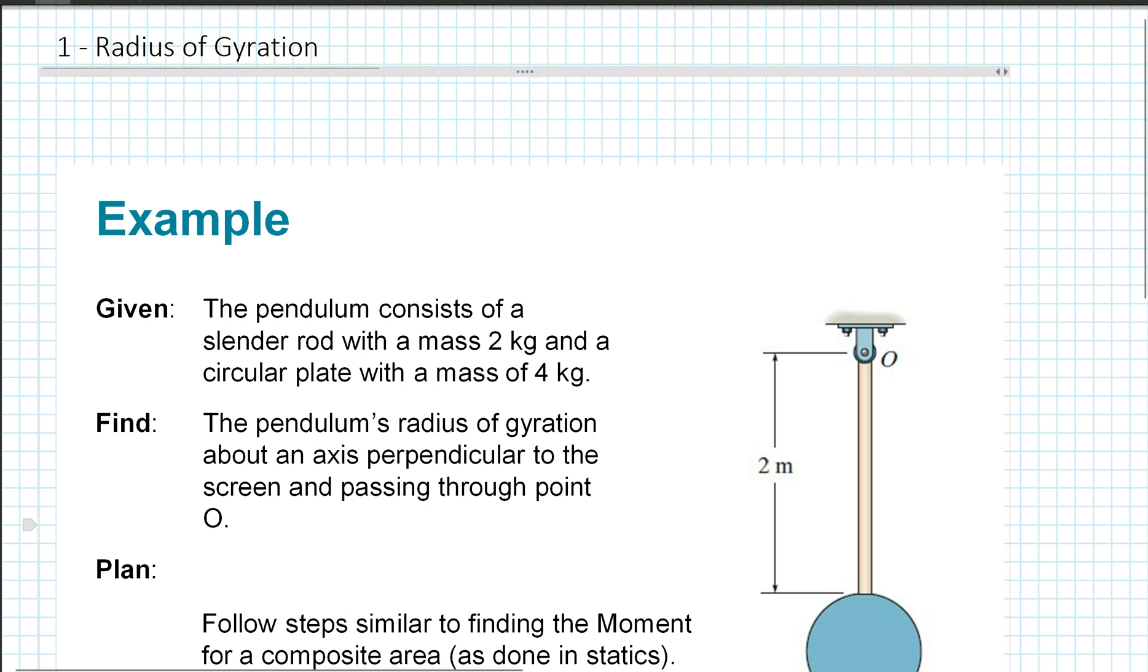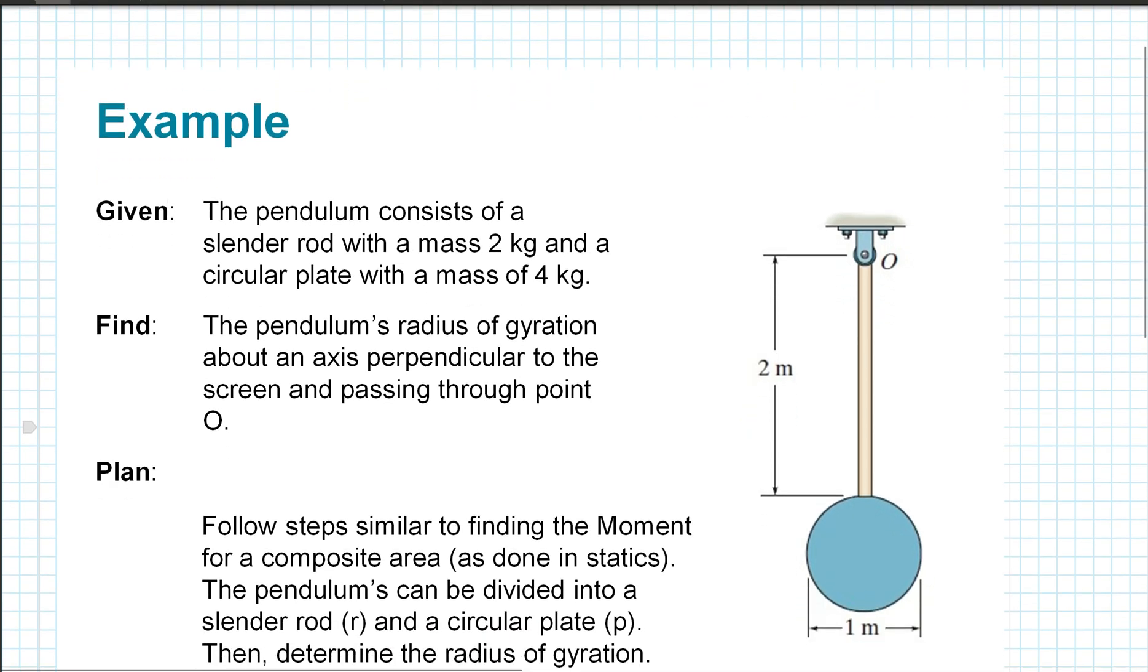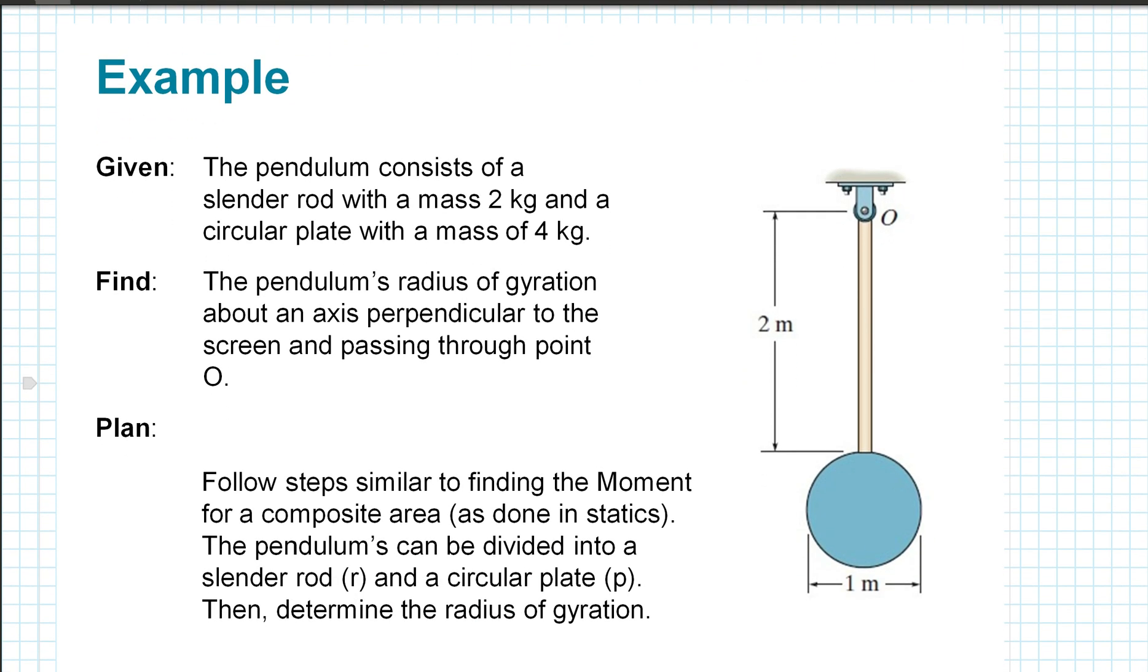So our example is given: The pendulum consists of a slender rod with a mass 2 kilograms and a circular plate with a mass of 4 kilograms. We're told to find the pendulum's radius of gyration about an axis perpendicular to the screen and passing through point O. In our planning, we're going to follow steps that are similar to finding the moment for a composite area as we've done in a previous course, statics.